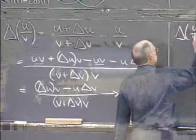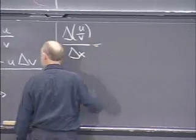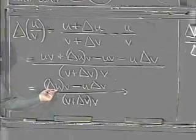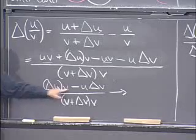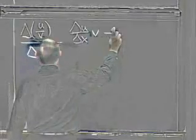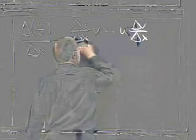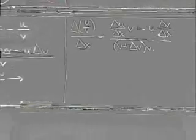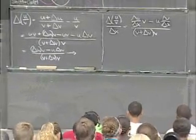Delta of u over v divided by delta x is this formula here divided by delta x. And again, I'm going to put the delta x under these delta u and delta v. I can think of that as dividing into this factor and this factor. So this is delta u over delta x times v minus u times delta v over delta x, and all that is divided by the same denominator, v plus delta v times v. Put the delta x up in the numerator there. Next up, take the limit.